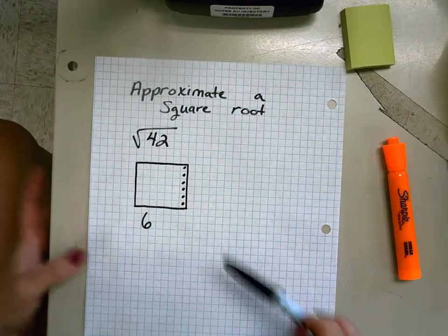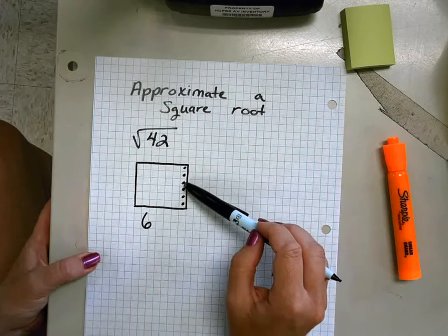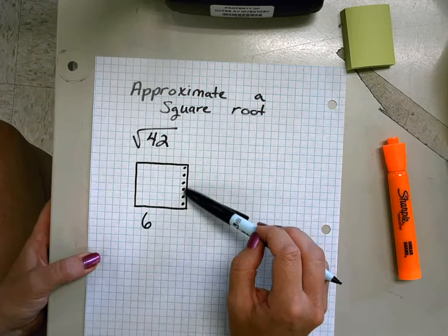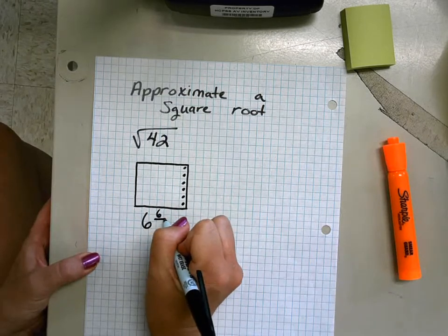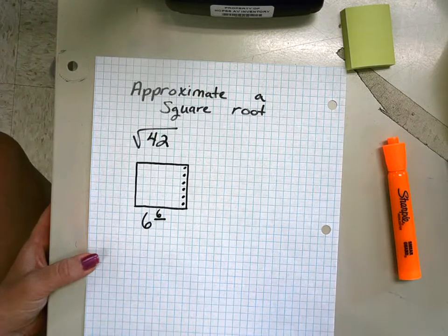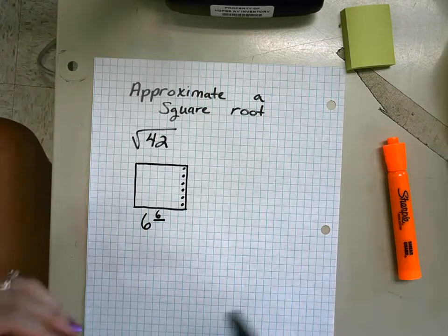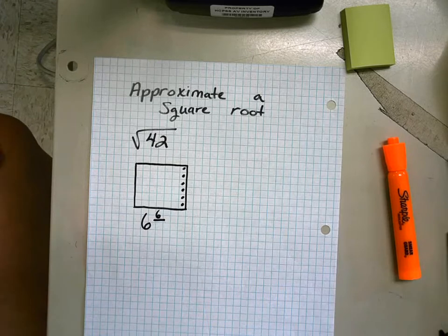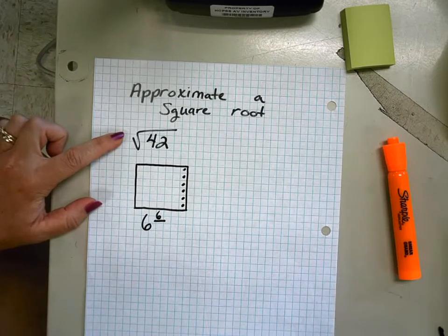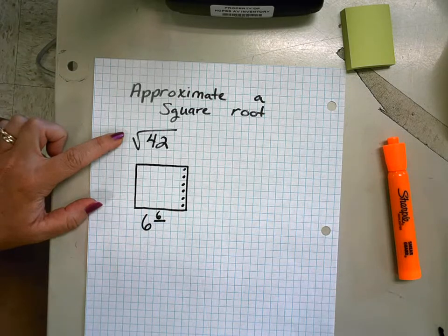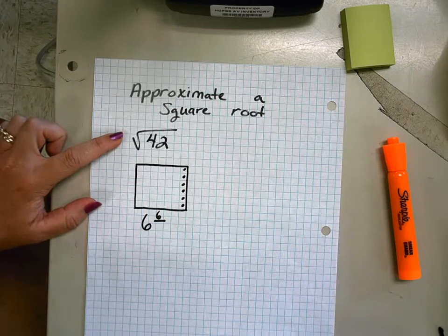This is the really cool part. The blocks that you've taken away, in this case we've taken away six, becomes our numerator. We need a denominator. What we're going to do from here is think about what's the next largest square root that's higher than 42 that's a perfect square. That would be 49. The square root of 49 is 7.